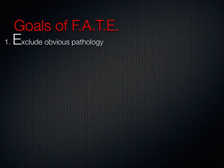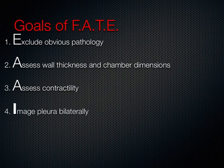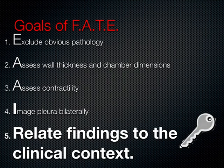The goals of the FATE evaluation are several. First, we want to exclude obvious pathology, including pericardial effusions, valvular failure, and mechanical devices. Next, we look at static dimensions of the heart, including wall thickness and chamber dimensions. At the same time, we assess contractility of the left and right ventricle. We image the pleura bilaterally because thoracic pathology can interplay with cardiac function. But the most important step is to relate the findings to the clinical context of the patient.